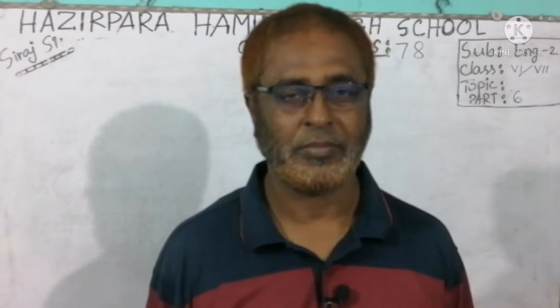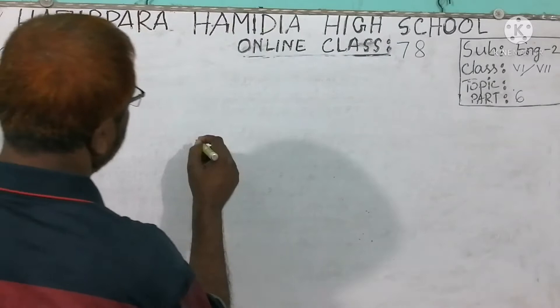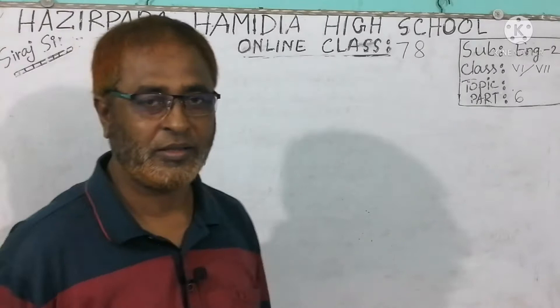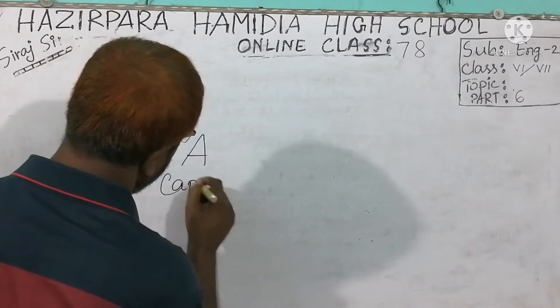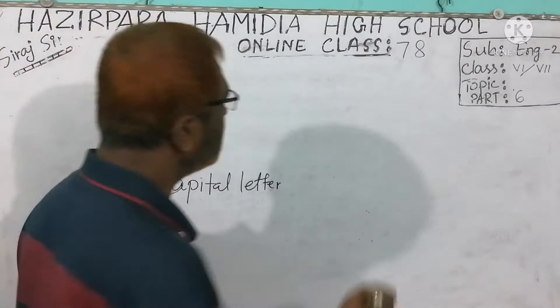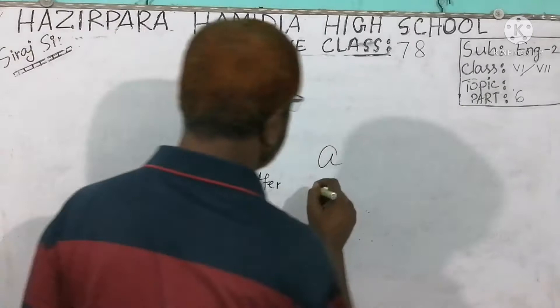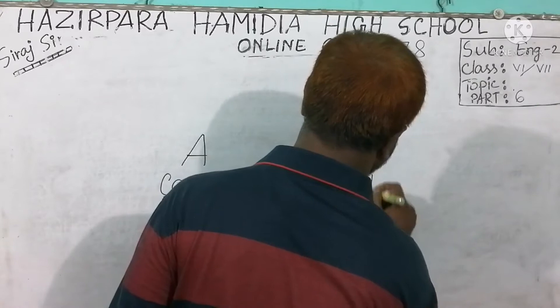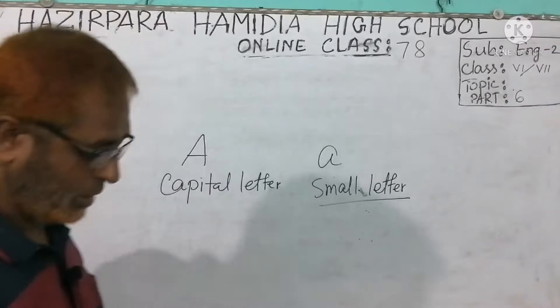Ok dear students, what is this? This is a capital letter. And on the other hand, what is this? This is a small letter — small letters.